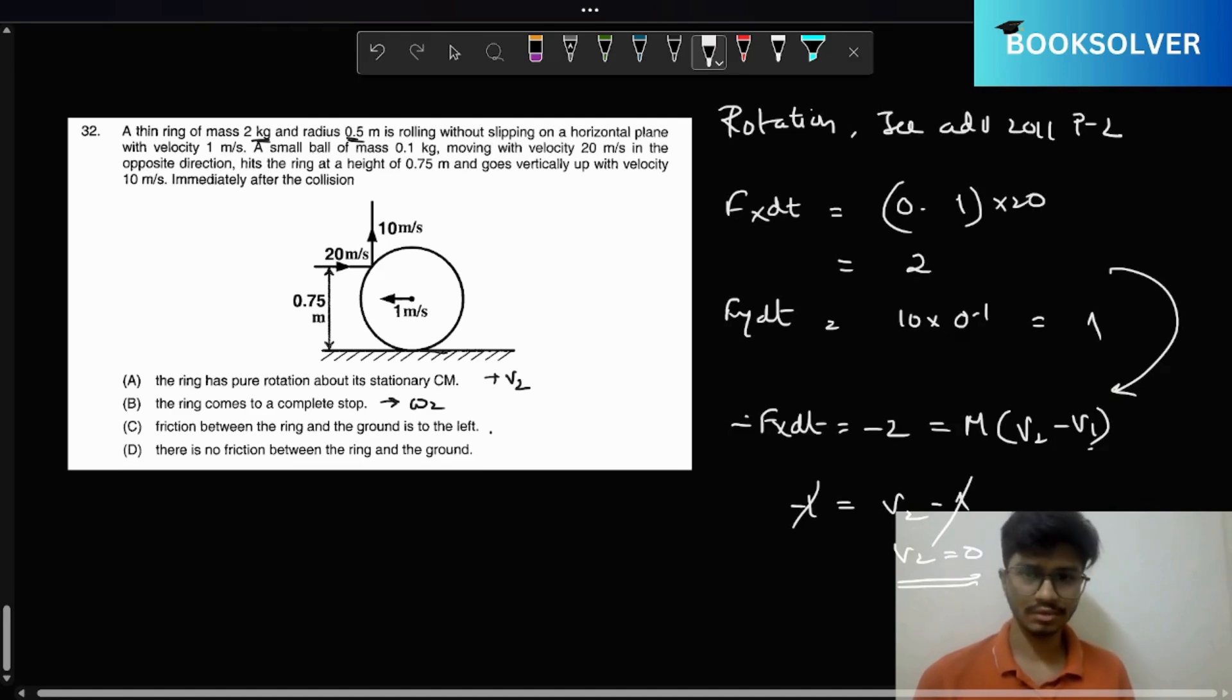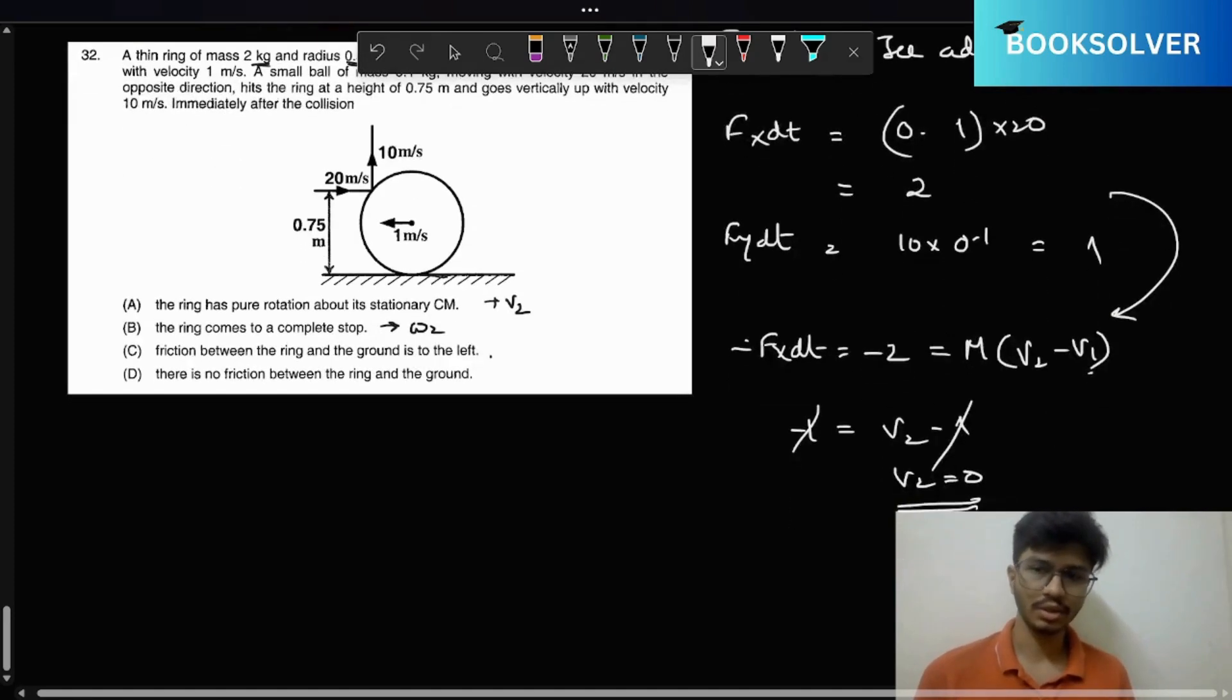Now we need to check if omega 2 is 0 or not. Based on that we'll choose between option A and option B. Now for omega, tau dt equals...